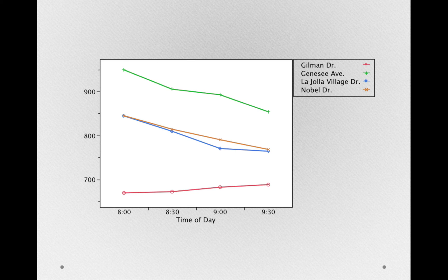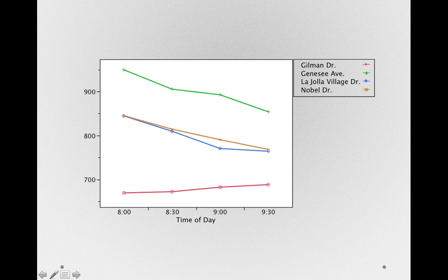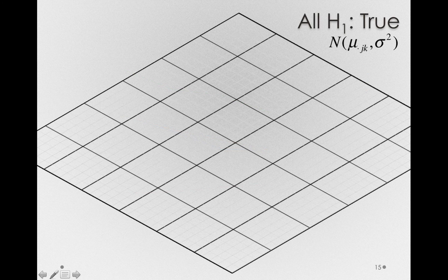Let's imagine that the mean structure we observed in our sample was actually a perfect representation of the population. I'm going to take the mean structure we have here and represent the population distributions. Remember, in this situation we're showing a case where all of the alternative hypotheses are true — that is, we have a route effect, a time of day effect, and an interaction between the two factors.